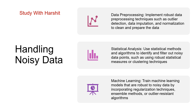उसके बाद statistical analysis — use किया जाए statistical methods और algorithms, identify करने के लिए और filter out करने के लिए noisy data points, जैसे की robust statistical measures और clustering techniques का use करके. Next है machine learning — train किया जाए machine learning models जो robust हों noisy data के लिए, by incorporating regularization techniques, ensemble methods और outlier-resistant algorithms. इन techniques का use करके हम noisy data को handle कर सकते हैं.